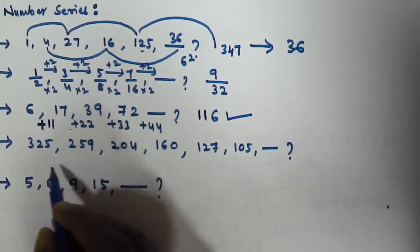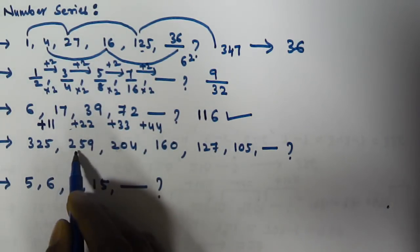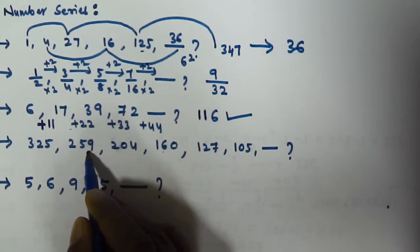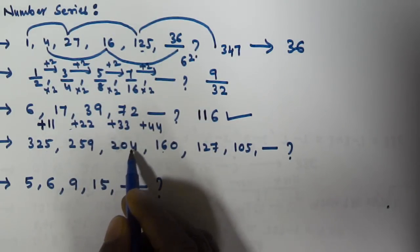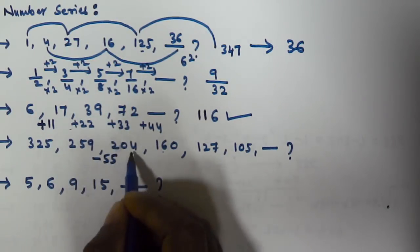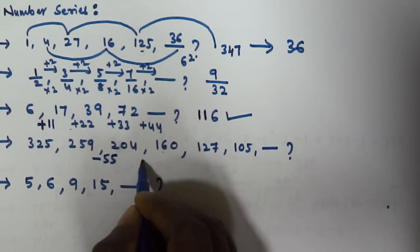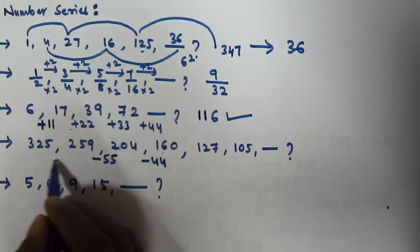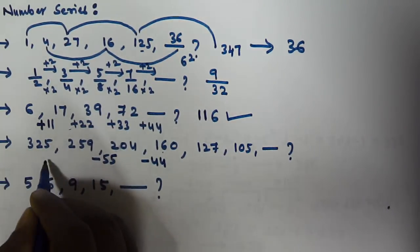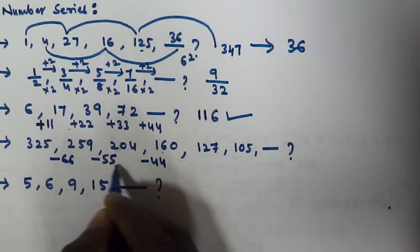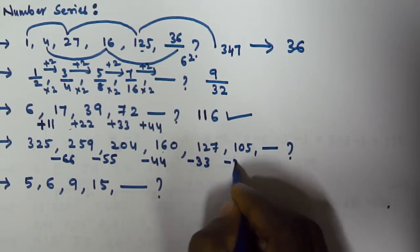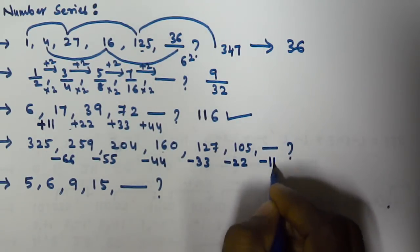For the series 325, 259, 204, 160, 127, 105: the differences are minus 66, minus 55, minus 44, minus 33, minus 22. So the differences are decreasing by 11 each time. That means the next difference is going to be minus 11.